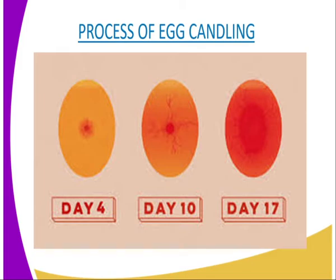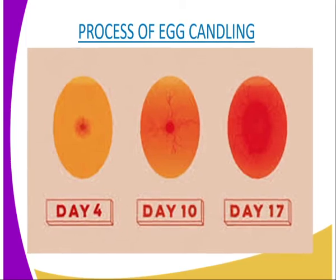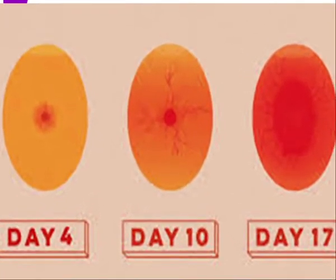On day 10, you do another egg candling to check whether the egg is fertilized. On day 17, you carry out egg candling once again, and in this case it is meant to identify whether the chick has already started to develop and grow.